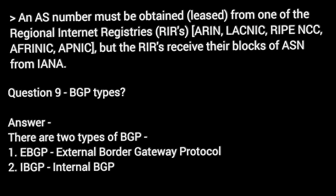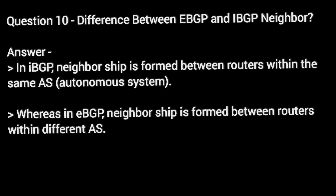Question 9: BGP types. Answer. There are two types of BGP: 1. EBGP — External Border Gateway Protocol. 2. IBGP — Internal BGP.